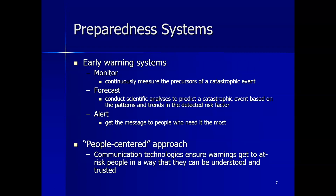To summarize the preparedness stage: early warning systems first monitor by continuously measuring the precursors of a catastrophic event, then forecast by conducting scientific analysis to predict events based on patterns and trends in detected risk factors, and finally alert by getting the message to the people who need it most.